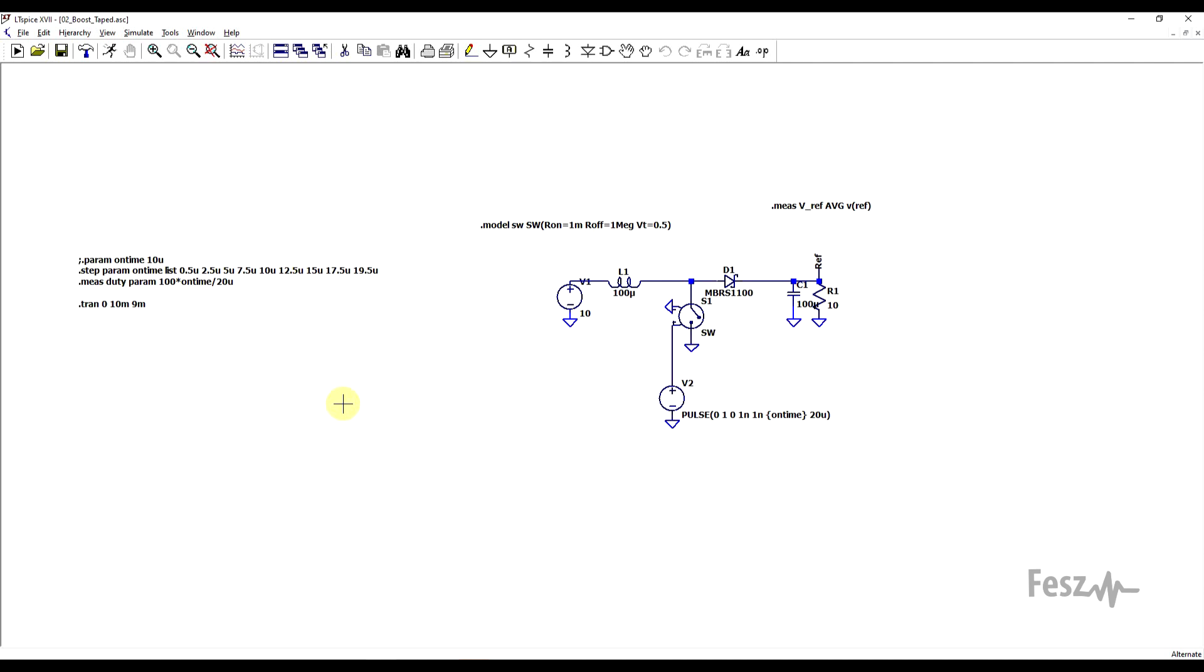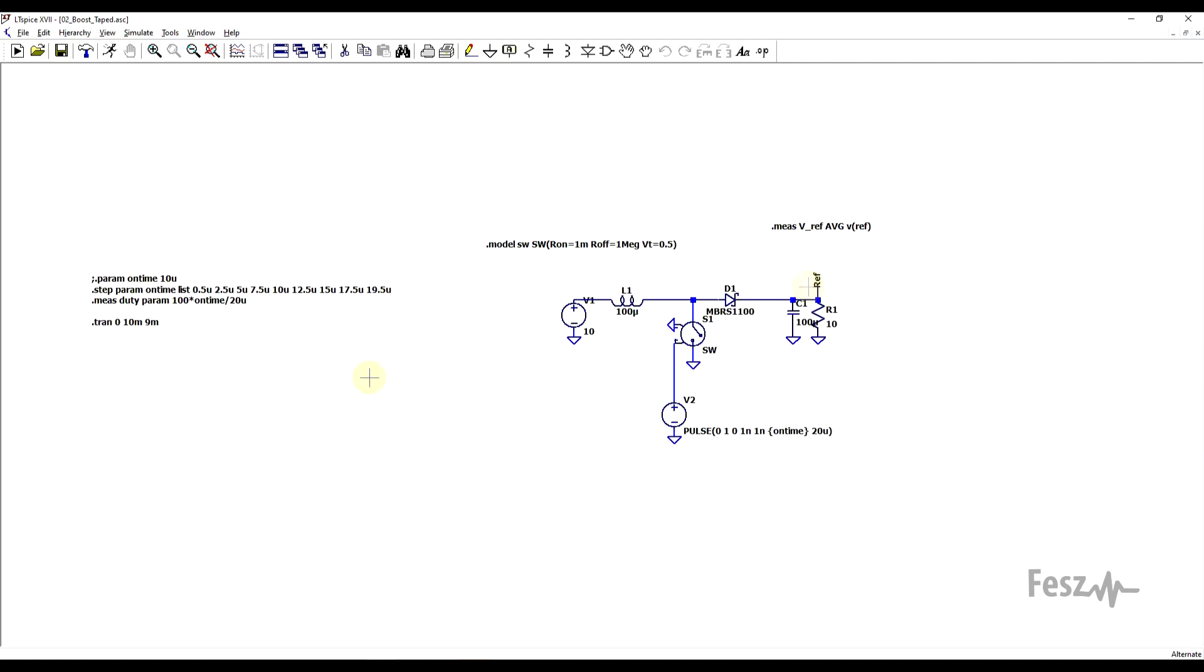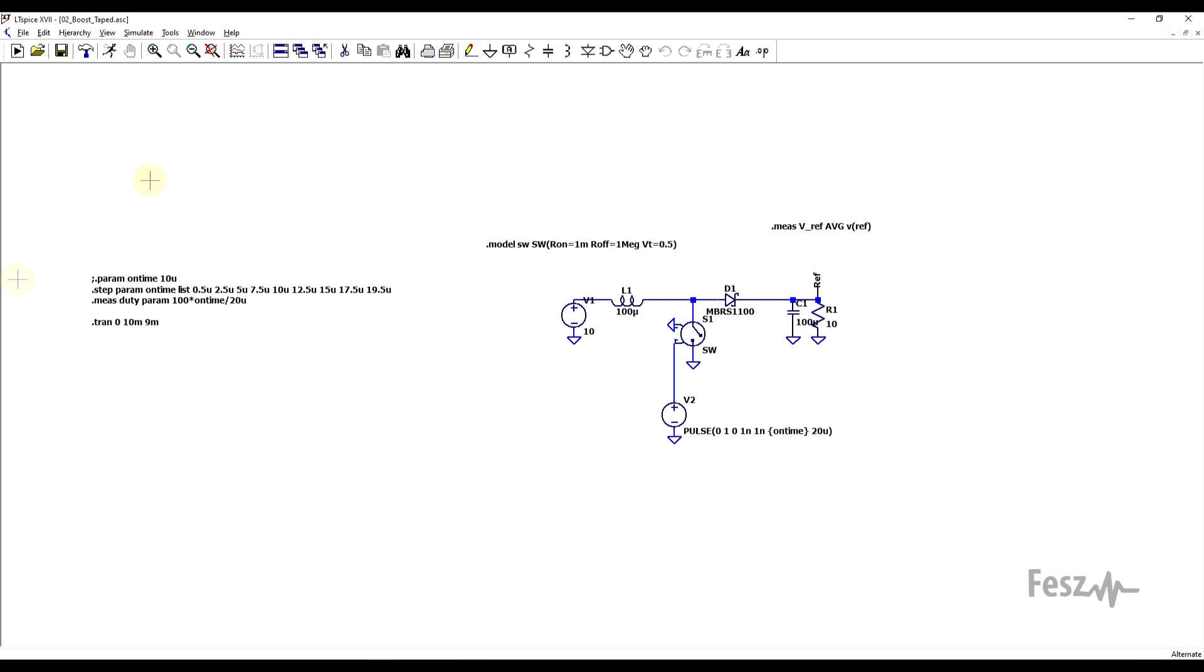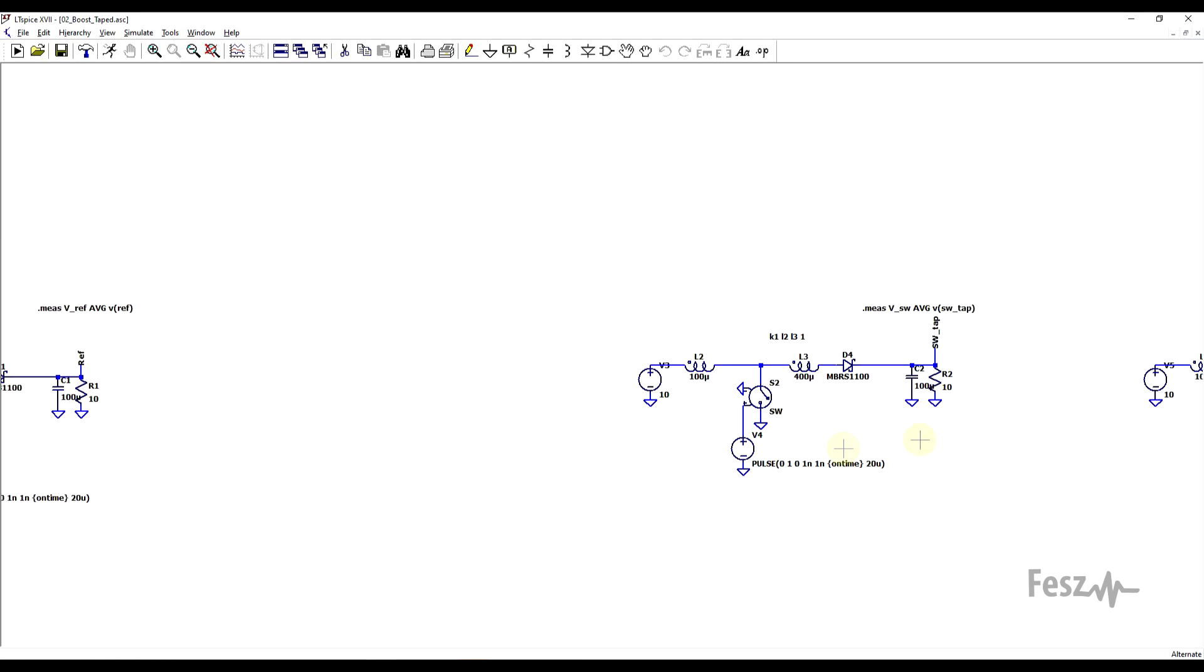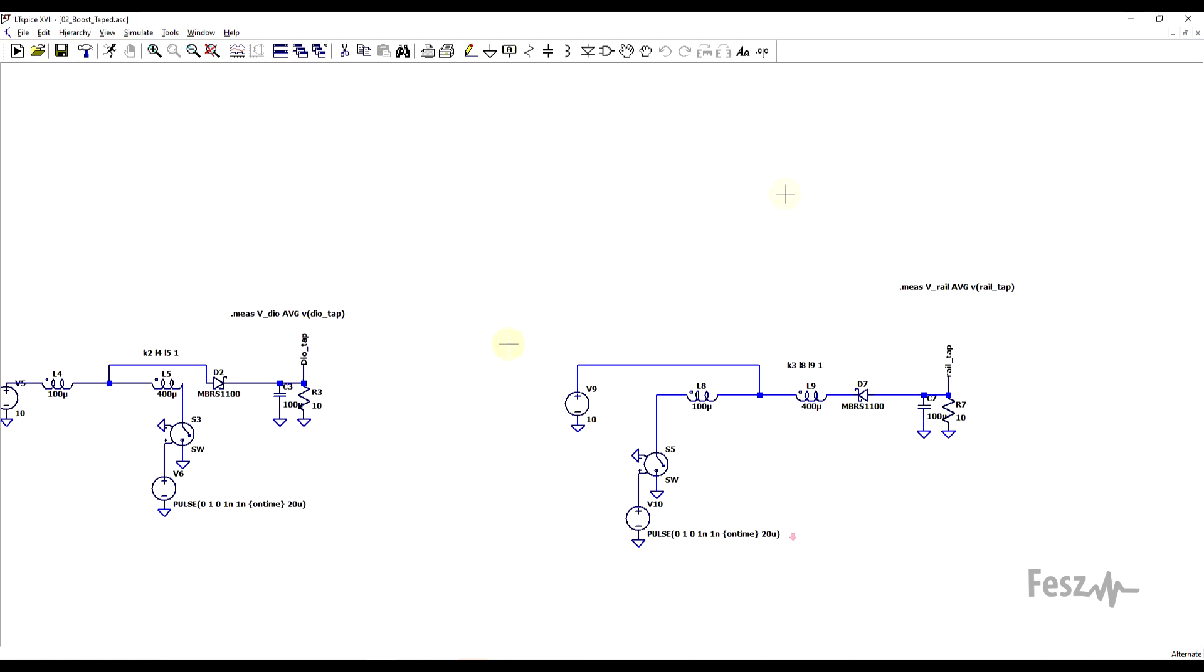Now I created a similar setup for the boost converter as well, so for the base reference as well as for the derivatives. So I'm using the same type of measurement and parameter statements, and I'm comparing the basic boost converter with the switch tapped, diode tapped, and the rail tapped implementations.